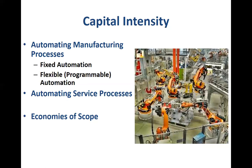Similarly, for automating service processes, organizations such as Disney have made significant investments in technology so that many service processes can be automated. Disney uses the internet and overall connectivity across their different theme park locations to manage different requirements at different places. Waiting lines can be addressed using these kinds of automated processes. This is one way in which capital intensity can help organizations manage their process strategy in a much better way.